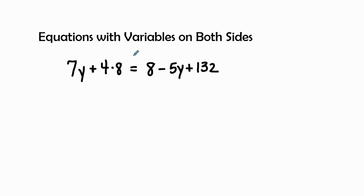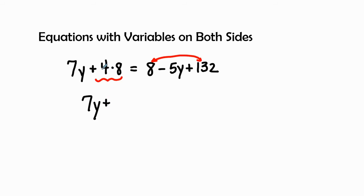Now we ask ourselves what are we going to combine. We have 7y here, and a positive 4 times 8, so I'm going to combine those two terms together. On the other side I see a negative 5y, and I see 8 and 132 — those two get combined together. So rewriting to clean up: 7y plus 32 on the left, and negative 5y plus 140 on the right. 4 times 8 is 32, and 8 plus 132 is 140.